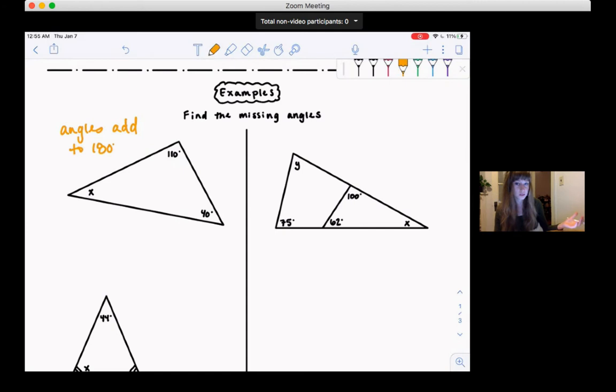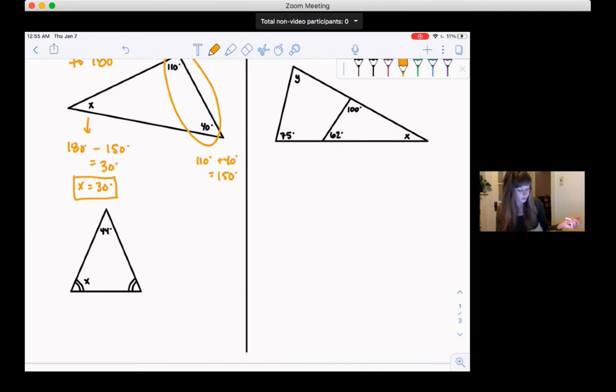So we could do 180, take away the two angles that we have. So we could do 180 minus 110 minus 40. Or sometimes people like to add the two angles that they have first. So you could do 110 plus 40. That's going to give you 150. And then to find x, we'll do 180, which is the total of all the angles, take away the angles that we have, which was 150. And what's left over is 30. So x would equal 30 degrees. So 180 was the total. We took away the angles that we already had. The angle that was left over was x. Okay, so that's a basic application of the Triangle Sum Theorem.